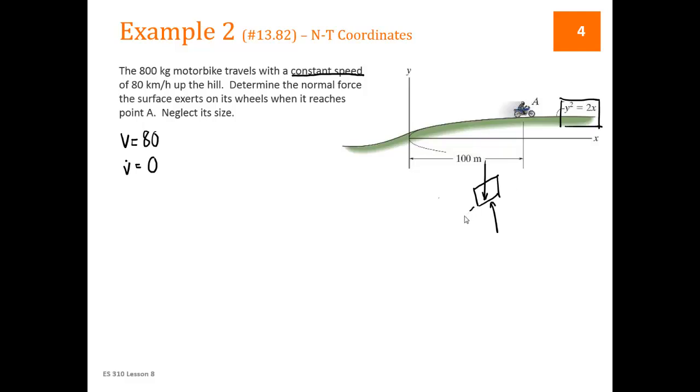The slope here, if we extend this line, has some slope theta. We're going to need that theta because that theta is also relating us. This theta is the same theta up there between the weight and the normal force. So the weight is mg. Normal force, we don't know. And so we're going to have to find theta at some point.